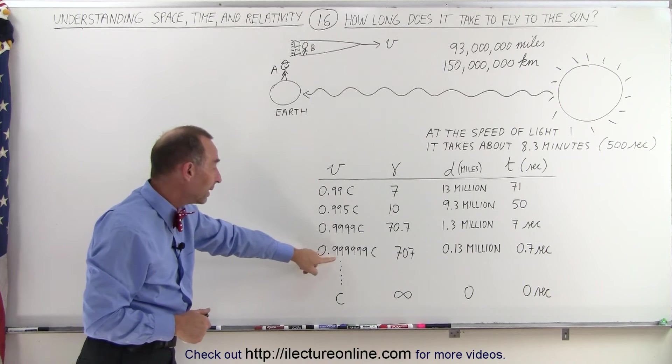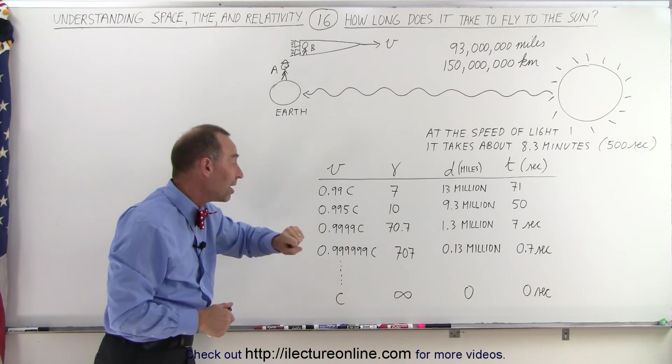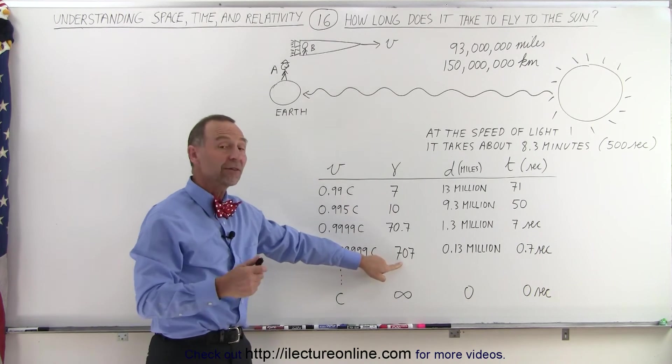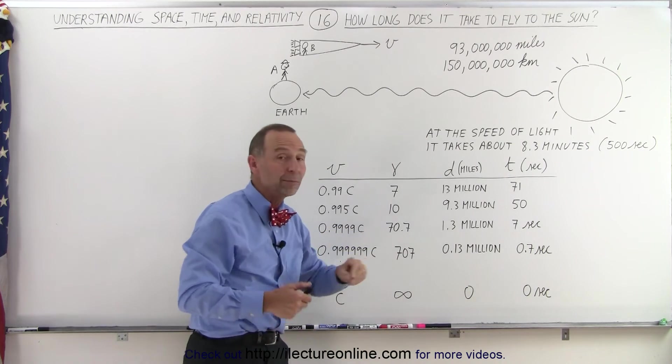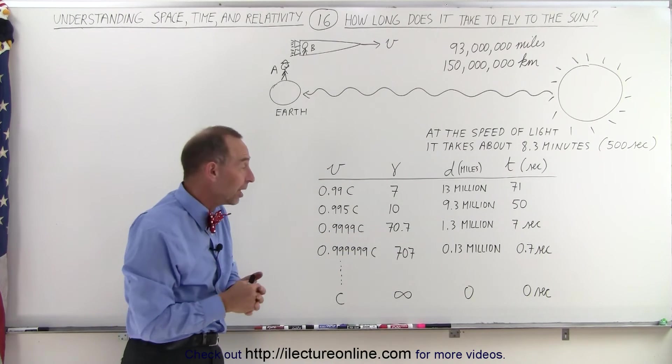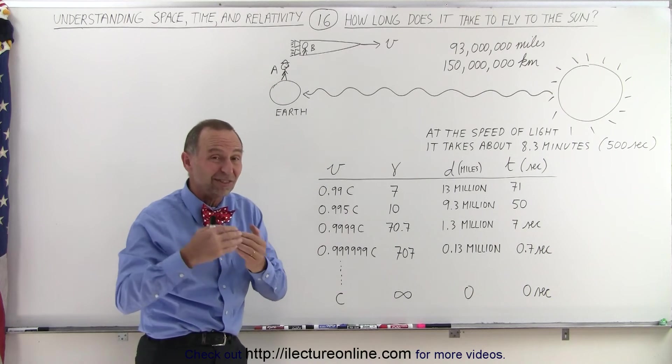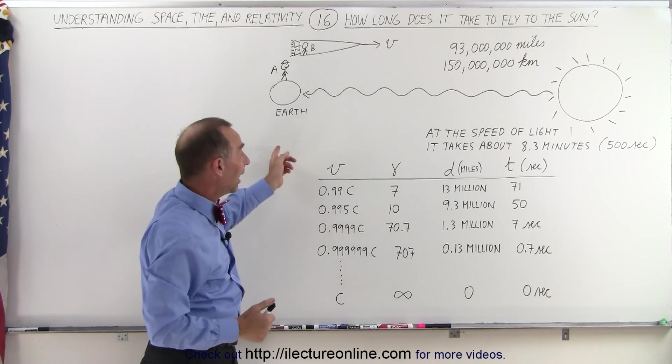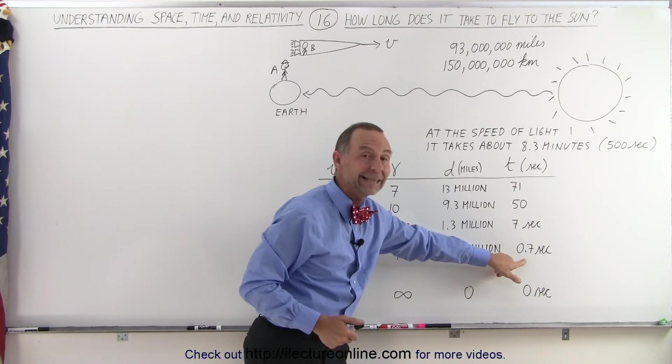Speed up even more to 0.999999c, the Lorentz factor now would be 707. The distance now would be a mere 130,000 miles, which is less than the distance to the Moon, and at that speed you would get there in less than a second.